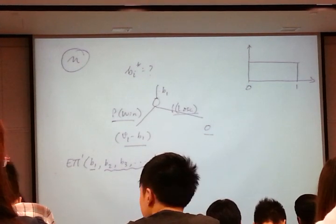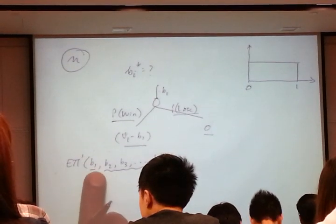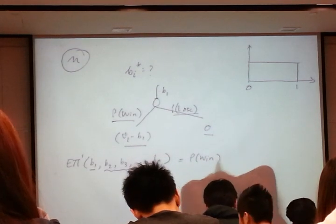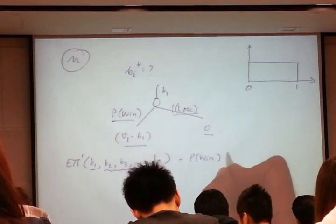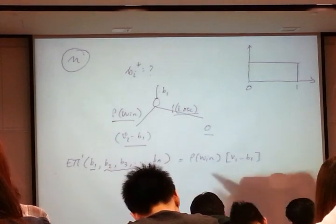Once you keep the terminology in mind, once you are very clear about why you are writing this, things become a lot simpler for you. So, the expected payoff to bidder 1 is simply the probability that I will win with that bid times V1 minus B1. This will give you a 0, so I am ignoring that.